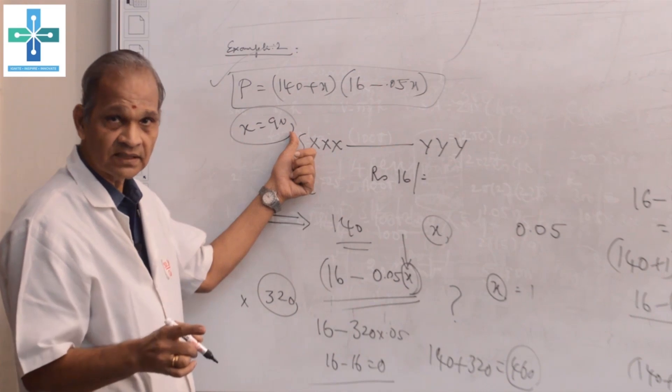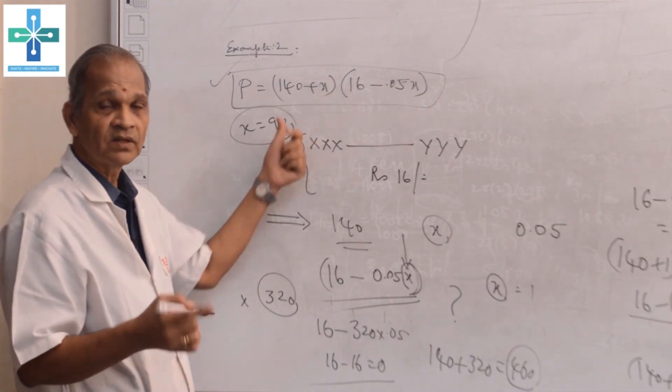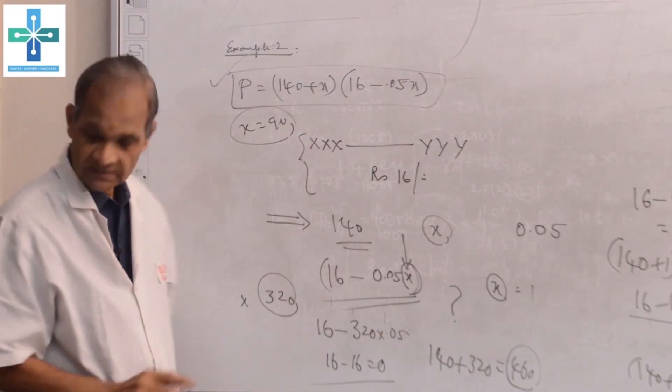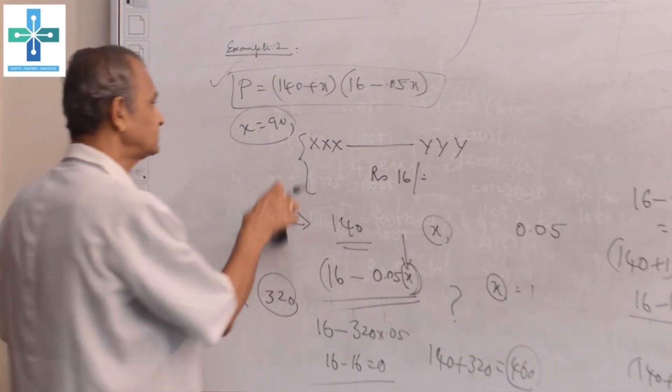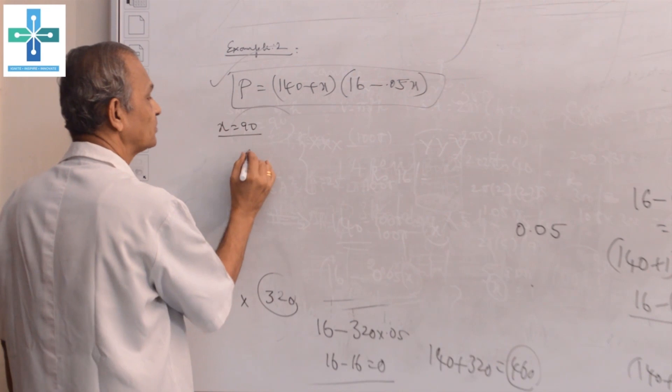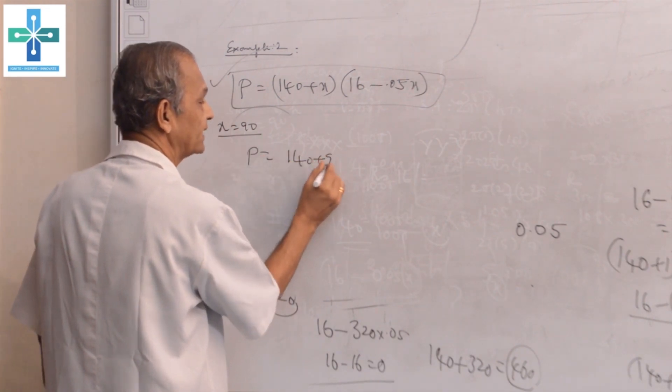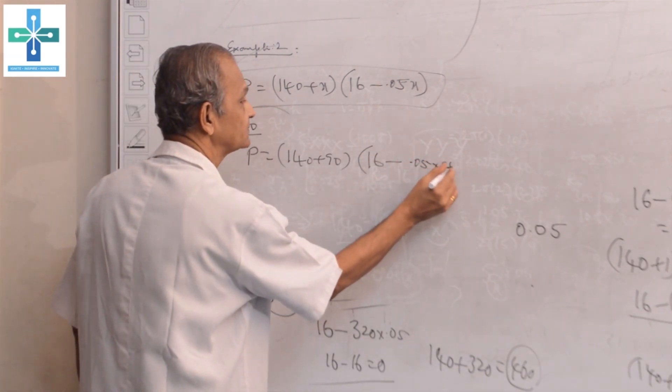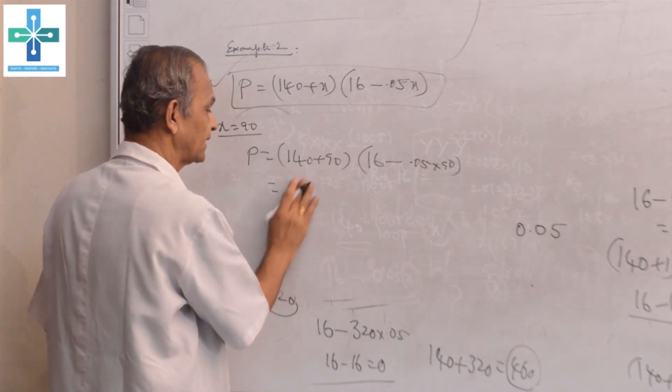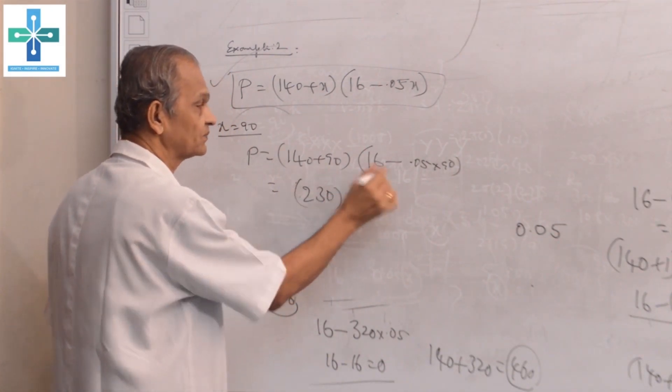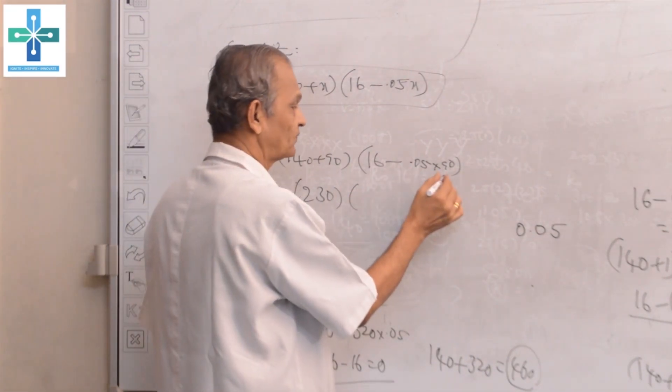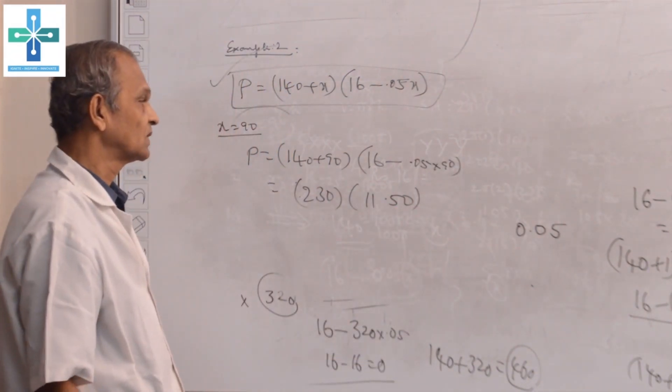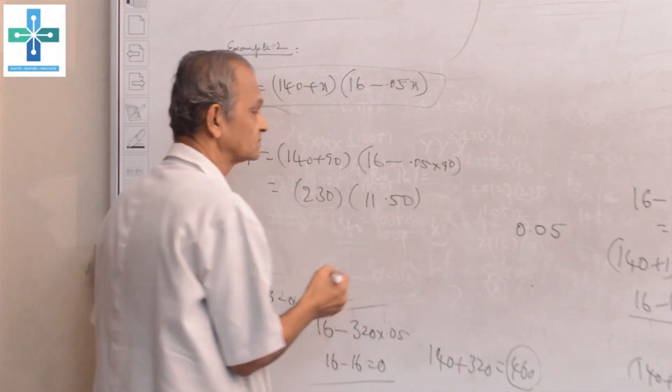When X is 90, he will get the maximum profit. If it is 1 less, profit is less. If it is 1 more, again the profit is less. For example, when X = 90, profit will be (140 + 90) times (16 - 0.05 into 90). This is equal to 230 times 11.50, which equals 2,645 rupees.